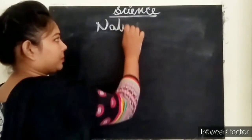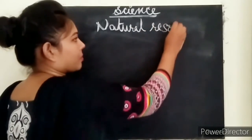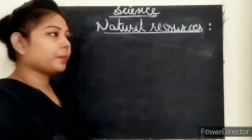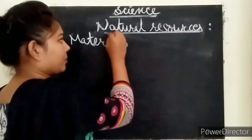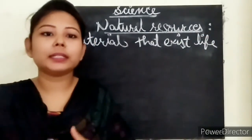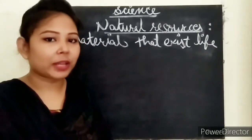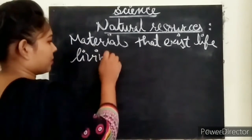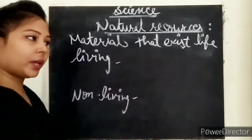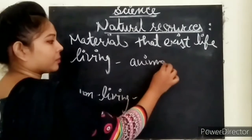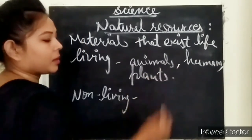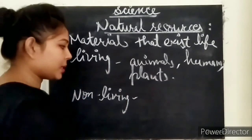Natural resources are the materials that exist in nature and fulfill the needs of living organisms. We have two types: living and non-living. Examples of living resources include animals, humans, and plants.